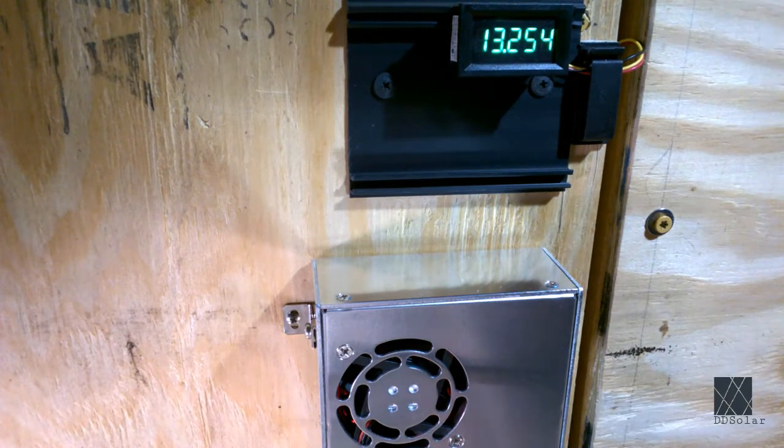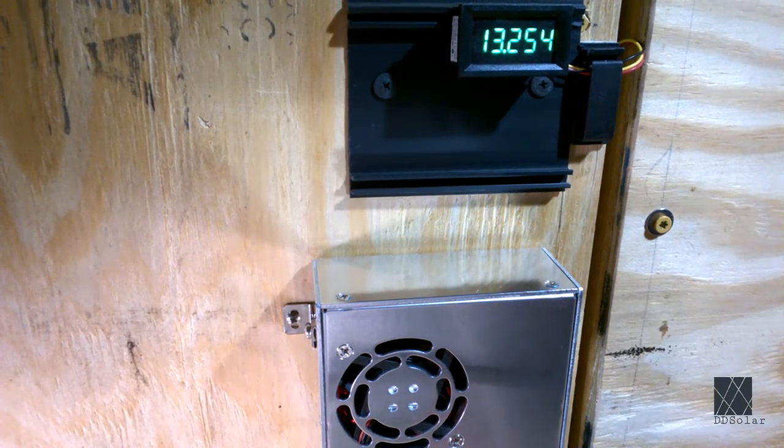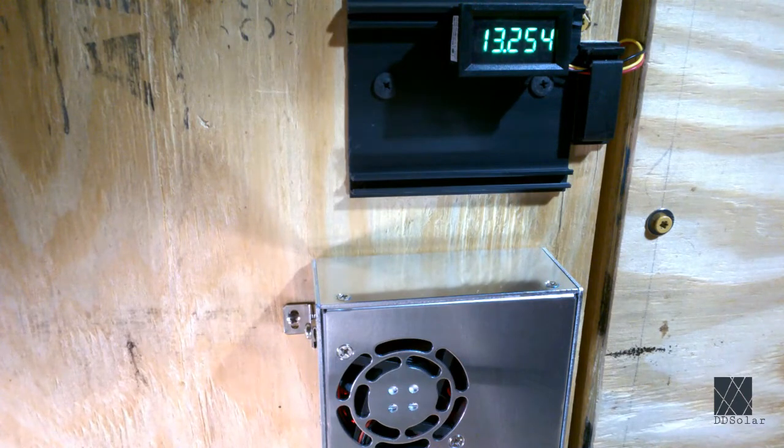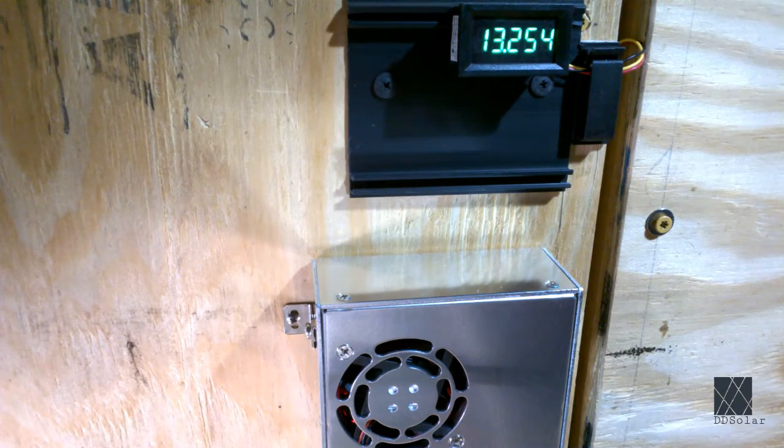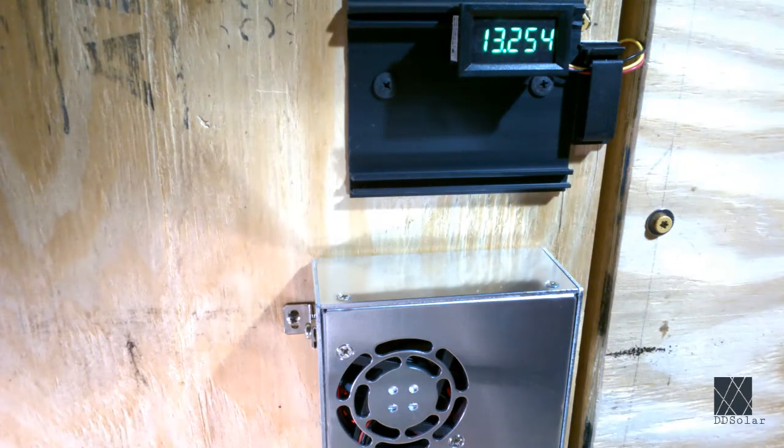The charge controller now reads 0.2 amps into the battery. And as expected, the voltage on this battery is starting to slightly fall. Without a 3 digit voltmeter I would be unaware of these changes that are taking place.